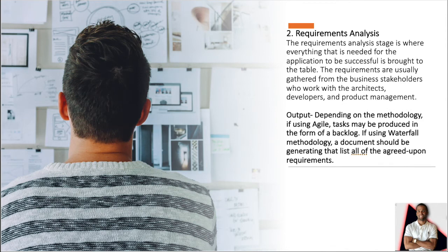The next step is requirements analysis. The requirements analysis stage is where everything that is needed for the application to be successful is brought to the table. The requirements are usually gathered from the business stakeholders who work with the architects, developers, and product management. The output for this step is, depending on methodology used: if Agile, tasks may be produced in the form of a backlog; if using Waterfall methodology, a document should be generated that has all the agreed upon requirements.